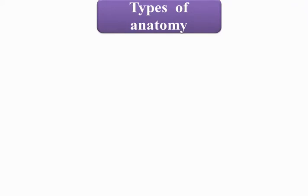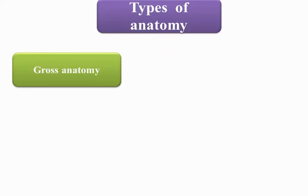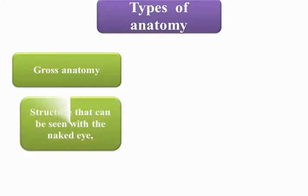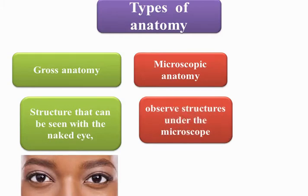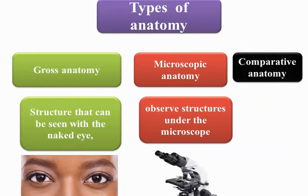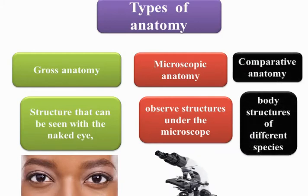What are the types of anatomy? We have three types. The first is gross anatomy, also called macro anatomy, which studies body structure with the naked eye. The second is microscopic anatomy, which observes structures under a microscope. The third is comparative anatomy, which studies structures of different species to compare between them.